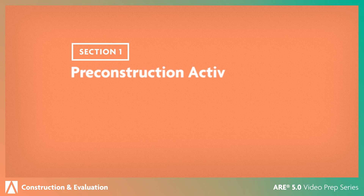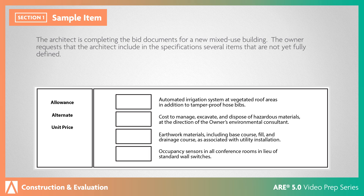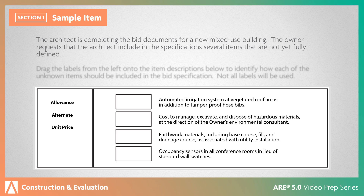In the pre-construction activities section, you'll focus on the construction planning and activities that occur prior to the start of construction. Let's look at a sample question. The architect is completing the bid documents for a new mixed-use building. The owner requests that the architect include in the specifications several items that are not yet fully defined. Drag the labels from the left onto the item descriptions below to identify how each of the unknown items should be included in the bid specification.